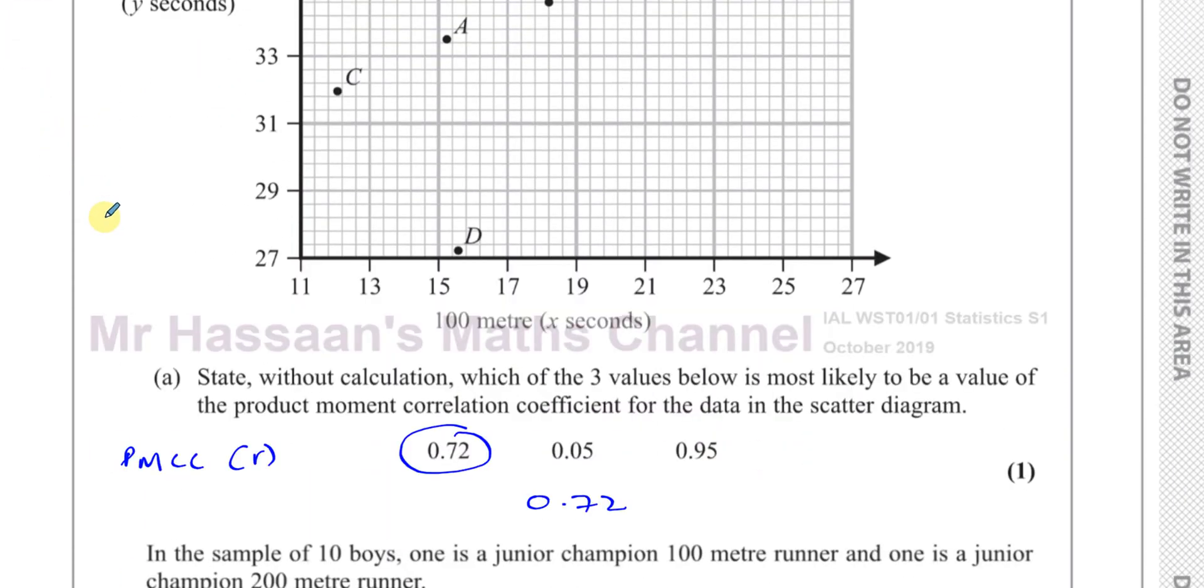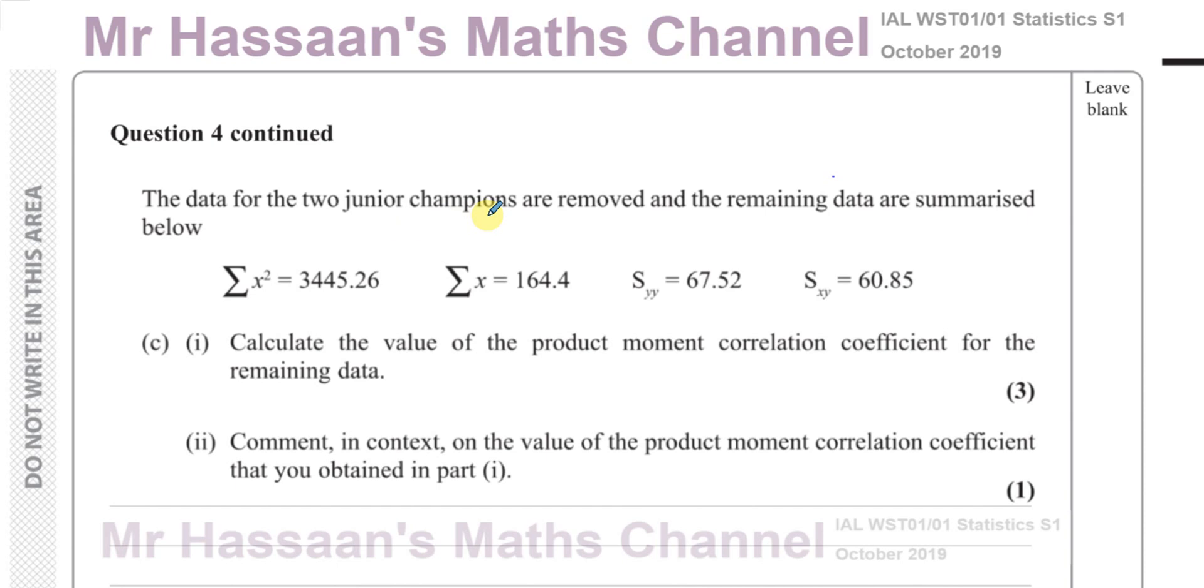Now for part C. Part C says the data for the two junior champions are removed and the remaining data are summarized below. So you have the sum of all the 100 meter times squared and then added together. The sum of all the 100 meter times. And this is like the variance of the Y values, kind of how far away they are from the mean of the Y values, the measure of the variance of that. This is the covariance of X and Y, you could say. These values tell you how Y varies amongst itself and how X and Y vary amongst each other, how far away they are away from their means, basically. Then it says calculate the value of the PMCC, the product moment correlation coefficient, for the remaining data and comment in context on the value of the product moment correlation coefficient that you obtained in part one.